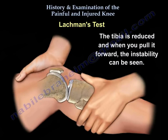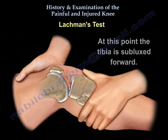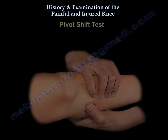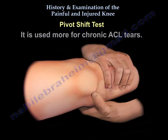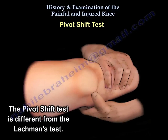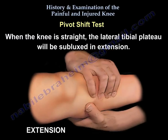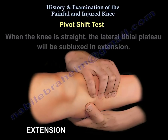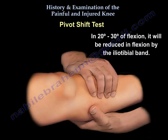The tibia is reduced, and when you pull the tibia forward, the tibia is subluxed forward. The pivot shift is also done for ACL tear but is more used for the chronic ACL tear — it is different than the Lachman test. When the knee is straight, the lateral tibial plateau will be subluxed in extension, and at 20 to 30 degrees of flexion, the tibia will be reduced by the iliotibial band.